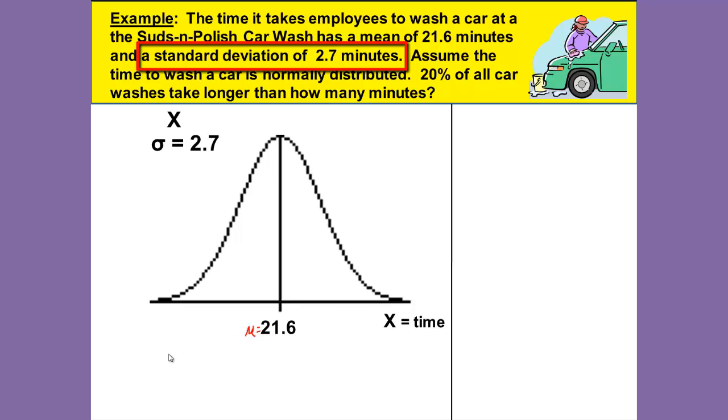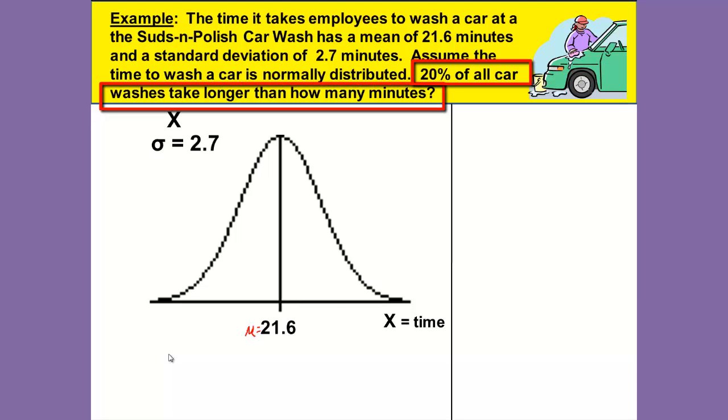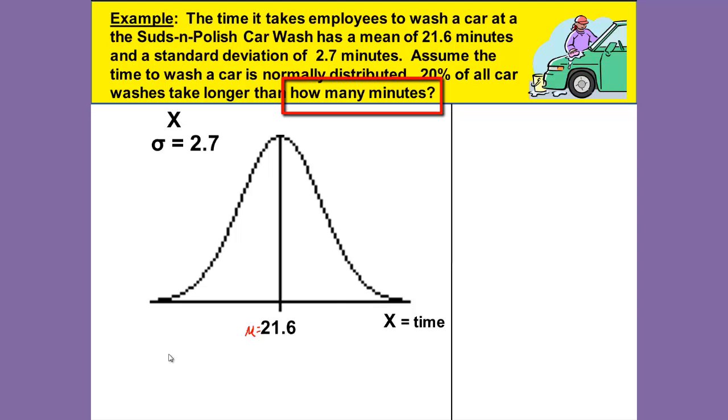The question asks us what? It asks us 20% of all car washes take longer than how many minutes. The greatest skill that you can bring to probability and statistics is your ability to read. Read the question carefully. What is this question asking? It's not asking us for a probability. It's asking us to find the x time in minutes that it takes. We need to then shade 20%, and longer, take longer than would be longer, longer would be greater, so that would mean we would be shading to the right. 20% is less than half shaded to the right would give us this area shaded here to the right.